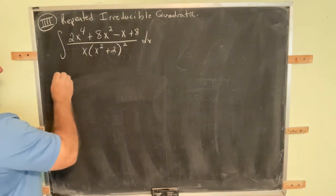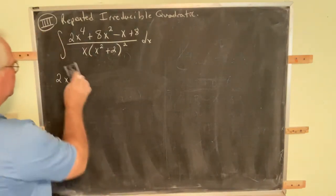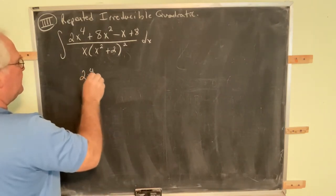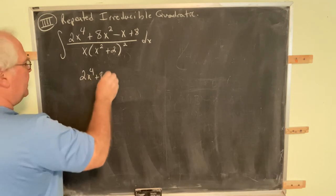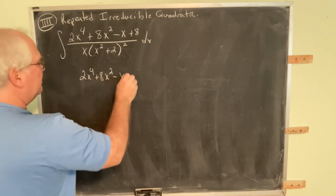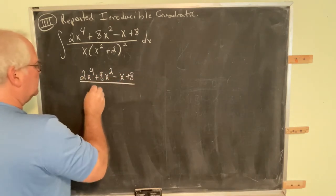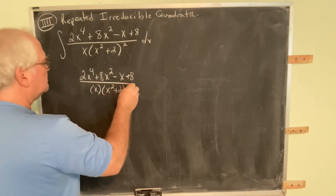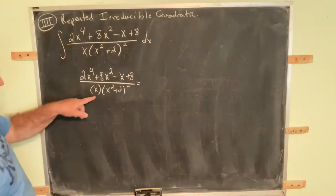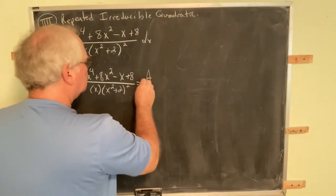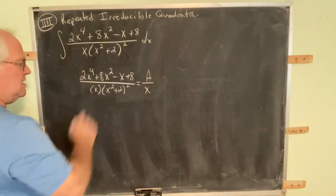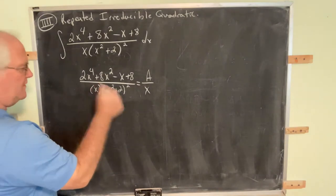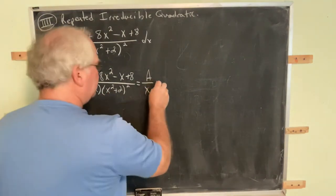So we have 2x to the fourth, let me go ahead and move this over just a hair. 2x to the fourth, plus 8x squared, minus x, plus 8, over... Alright, so we need to have an x. Since that's linear, this is constant. But now we need to have x squared plus 2 to the first, x squared plus 2 to the second.